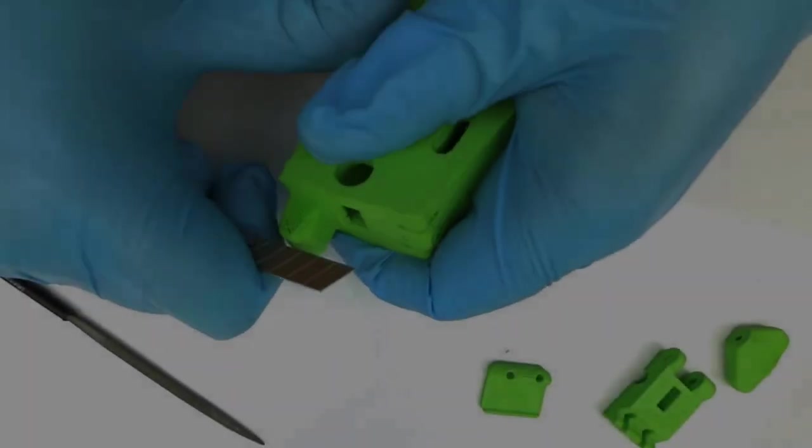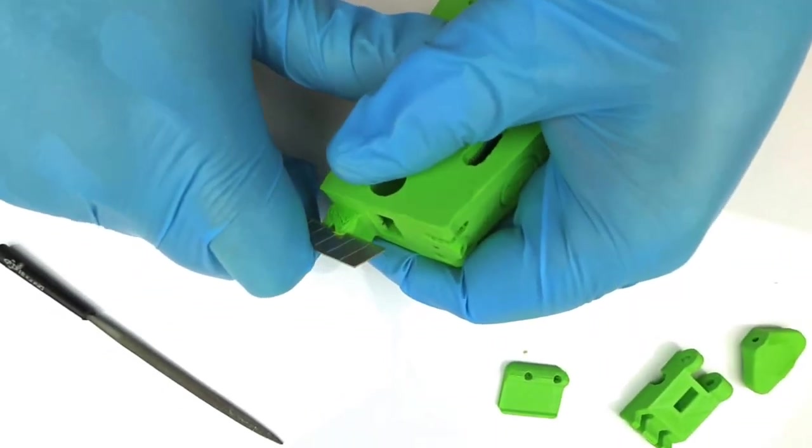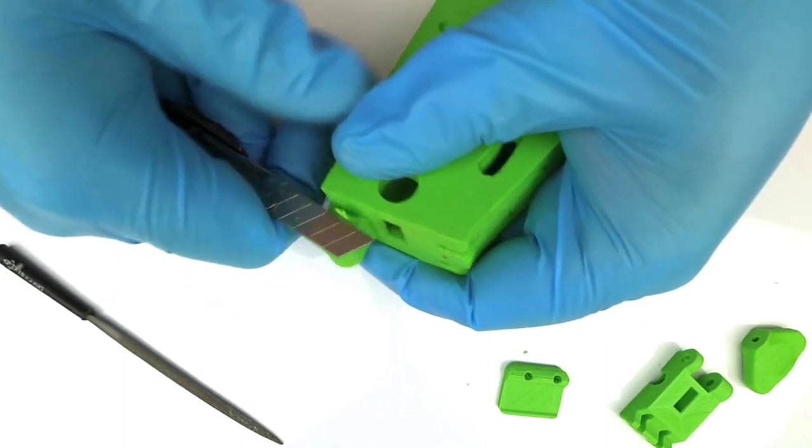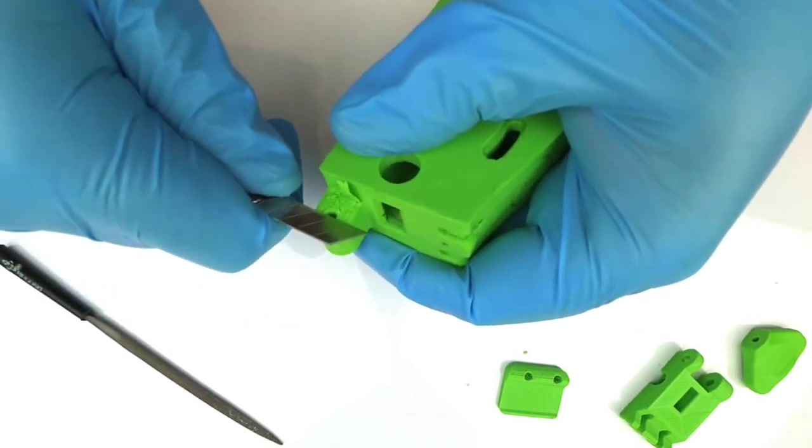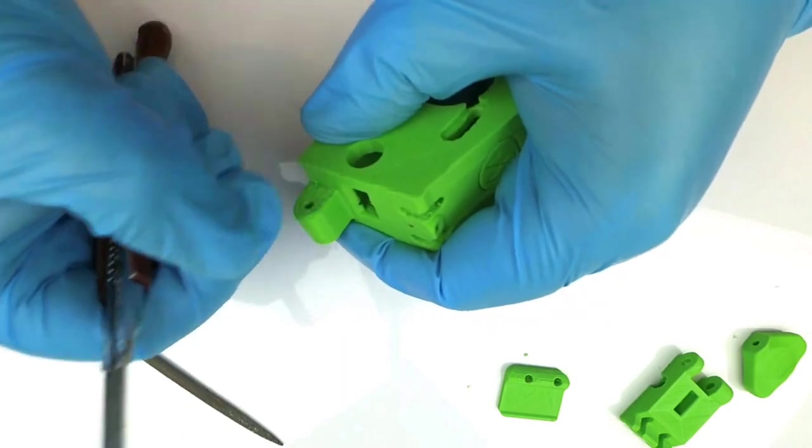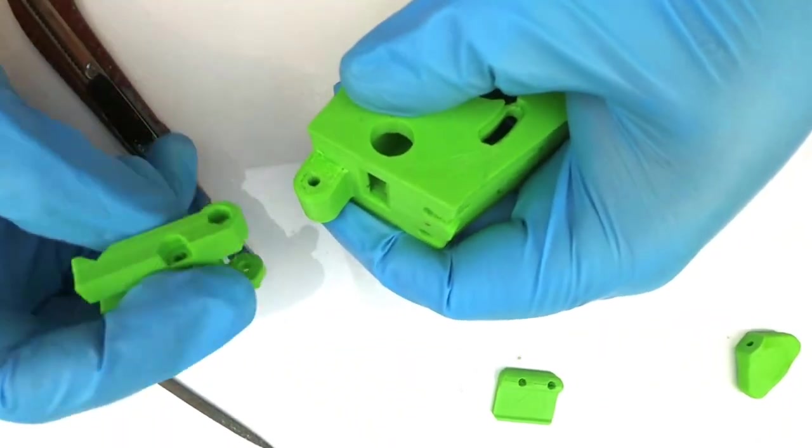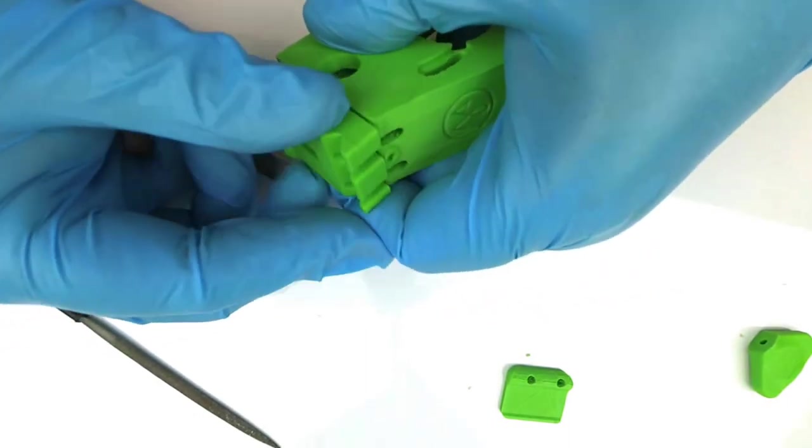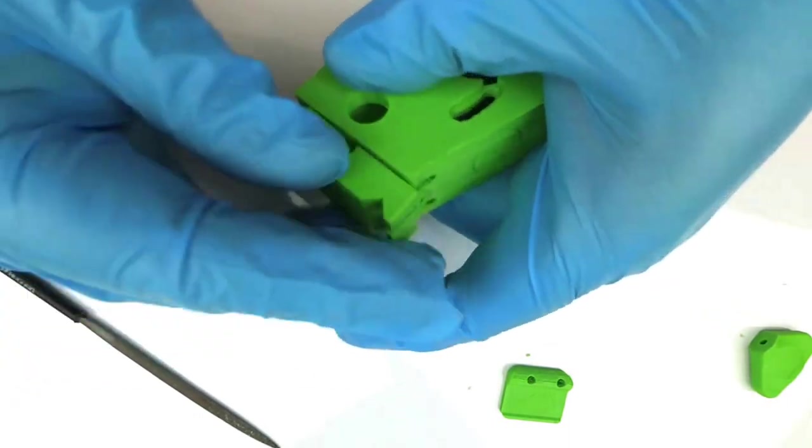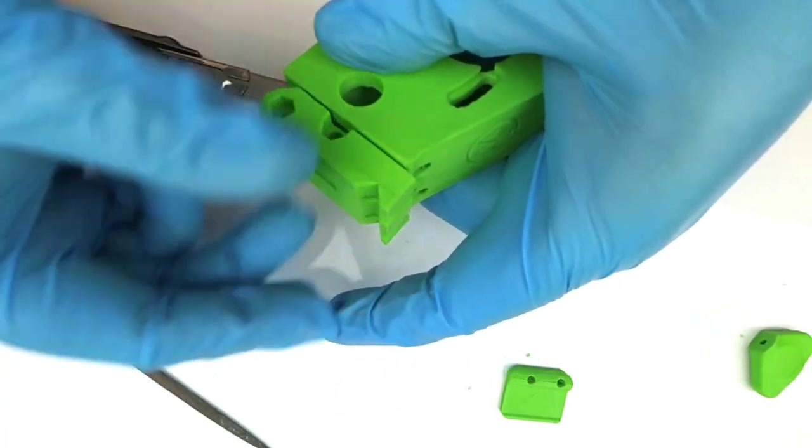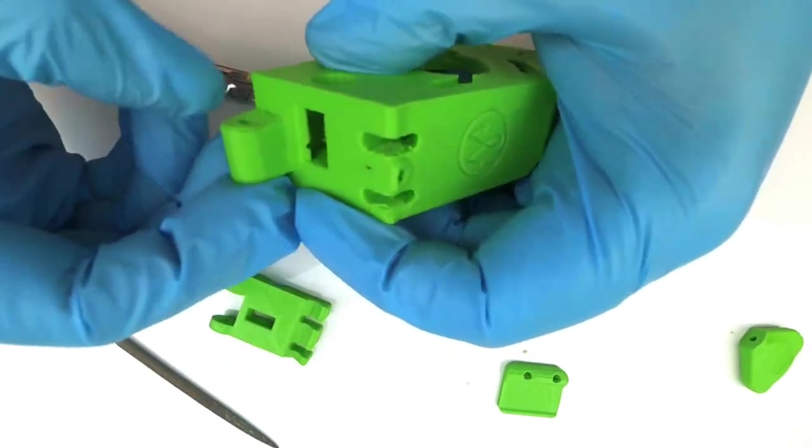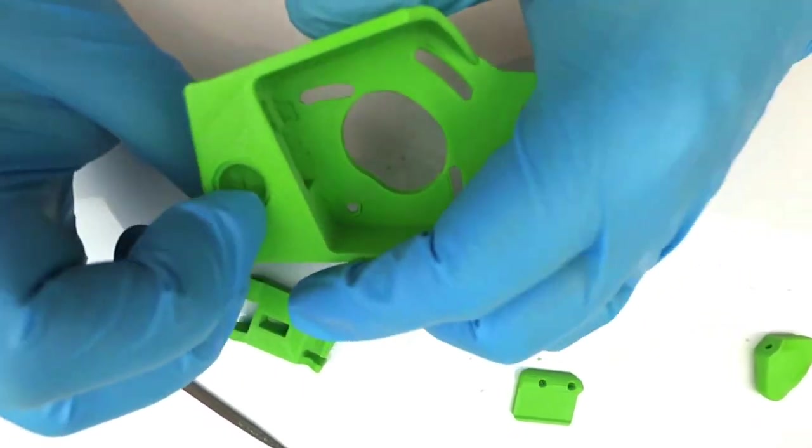So here we have some support too. You want to remove the first layer there. Sometimes it takes a little bit more, but you know, just the first layer allows free move of the idler.